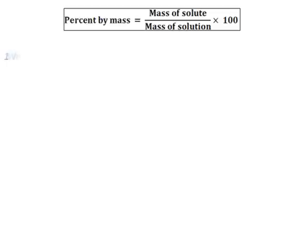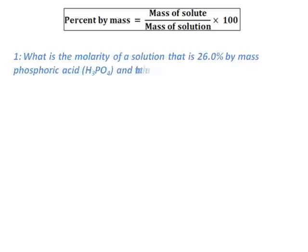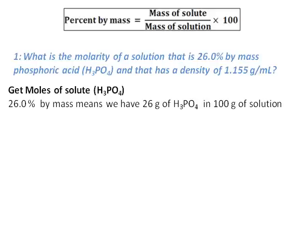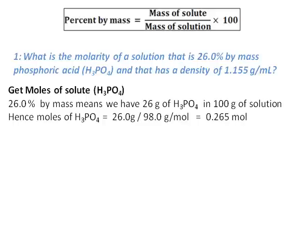Let's do a question on percent by mass. What is the molarity of a solution that is 26.0% by mass phosphoric acid and has a density of 1.155 grams per milliliter? Percent by mass is given and molarity is asked. Our first job is to get the moles of solute. 26.0% by mass means we have 26 grams of phosphoric acid in 100 grams of solution. Moles of phosphoric acid equals 26 divided by 98, which is 0.265 moles.